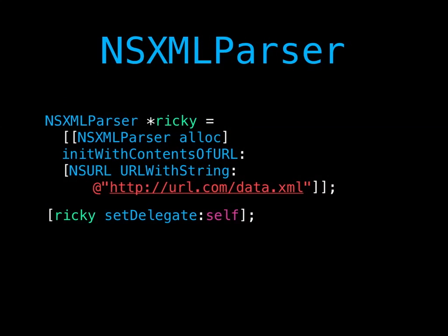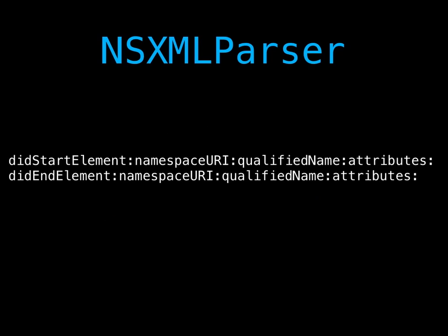Apple wants you to use NSXMLParser. You initialize it with some data, set a delegate, and then you run into callbacks like didStartElement namespace URI qualified name attributes, and didEndElement. Every time you run into an element your delegate gets told, and it's up to you to create the data out of it and store it somewhere. So you're basically throwing away the good thing about XML, which is the lovely tree. It is really fast and really low memory though, so it is sometimes useful.